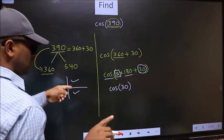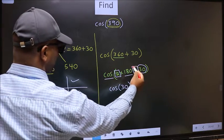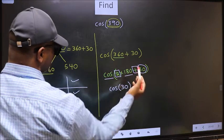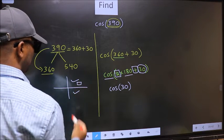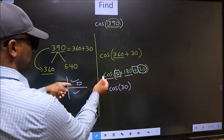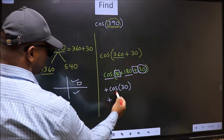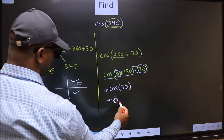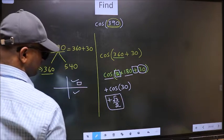To select the quadrant, we should look at this symbol. Here we have plus, which means the angle lies in the first quadrant. In the first quadrant, cos is positive, so we get +cos(30) = √3/2. This is our answer.